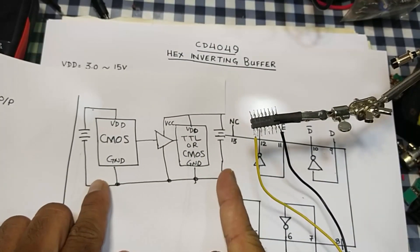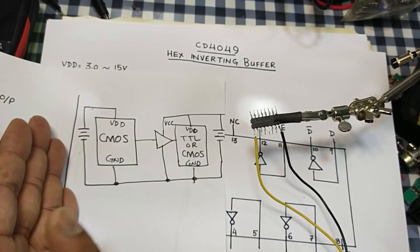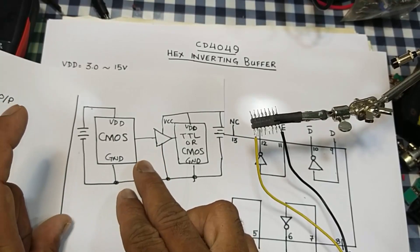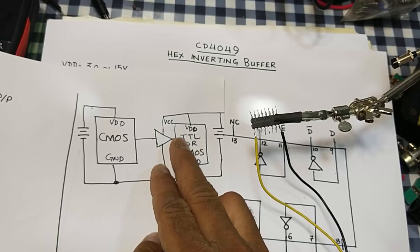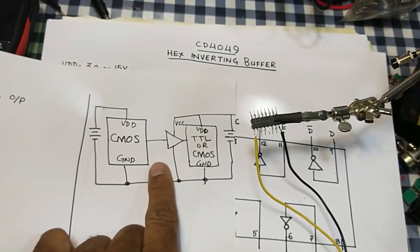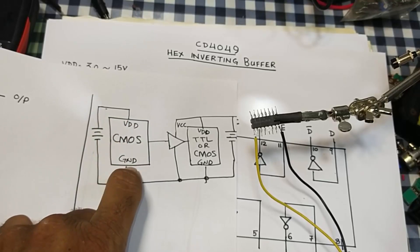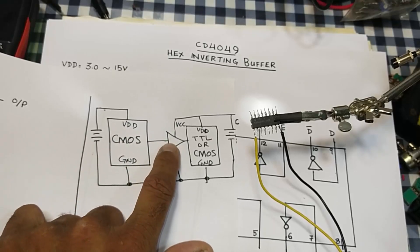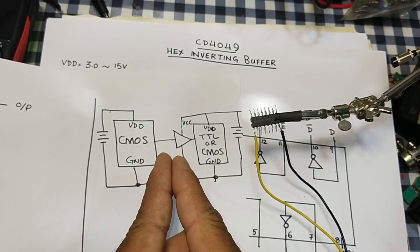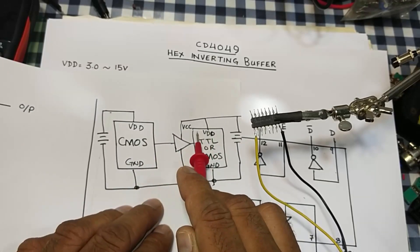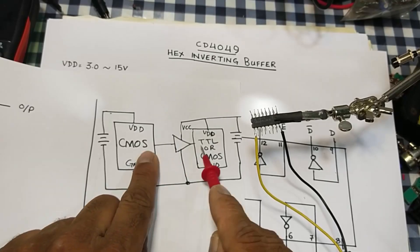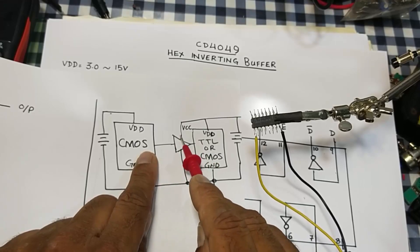A buffer is used to interconnect two circuits with different power supplies, different current levels, and different voltage levels. This IC has a wide input range and its output is used to drive TTL or CMOS circuits. The circuit has a separate biasing — for example, a microcontroller or microprocessor drives this IC, and its output drives the next circuit. It works as an interconnect source between two circuits, acting as an interface.